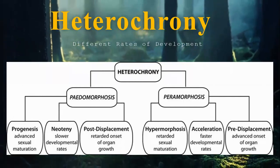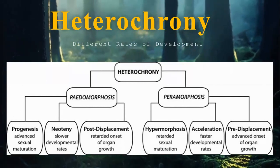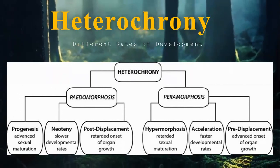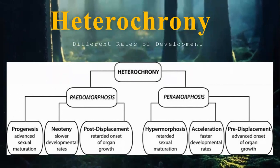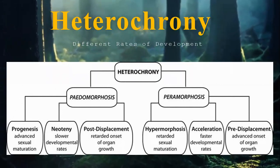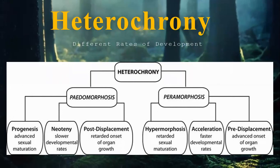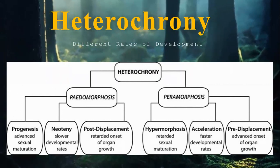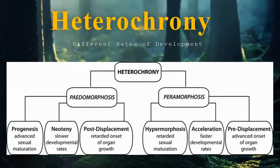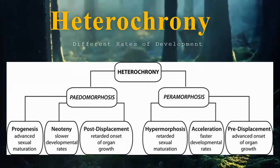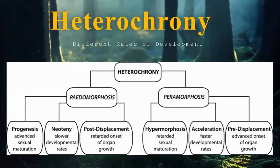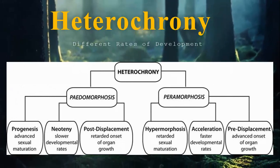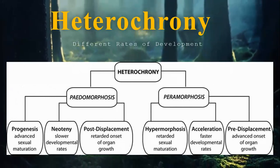The topic of today's lecture is heterochrony, an evolutionary developmental biology term. This term was first used in 1875 by Ernst Haeckel after his recapitulation theory. When there were some deviations during the rates of development, the term was again used in 1930 by Gavin de Beer in the modern sense.